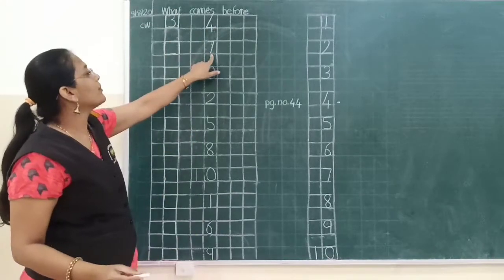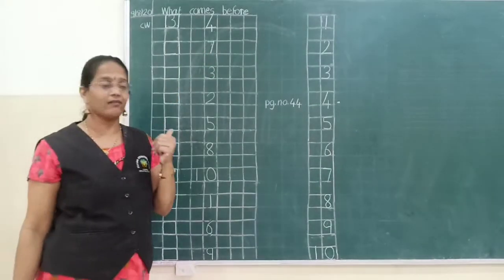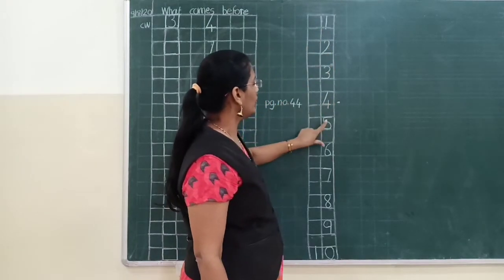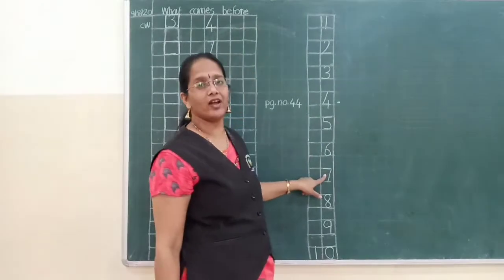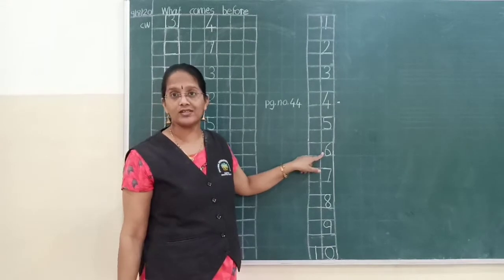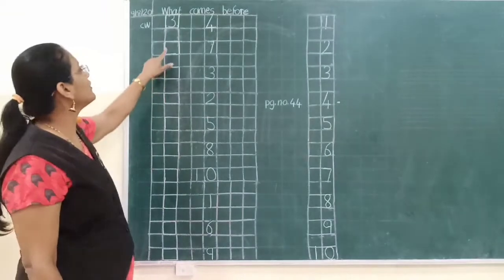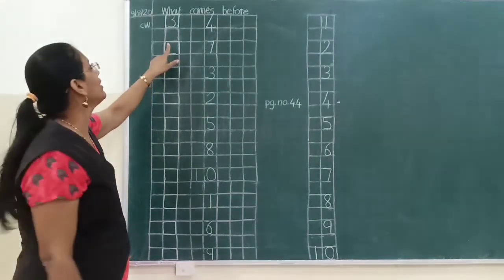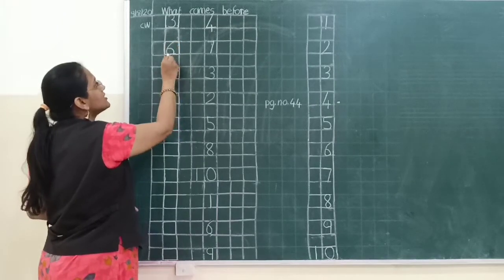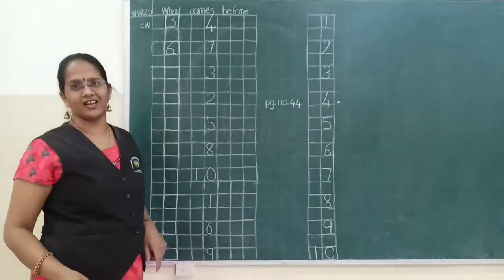Now see — yahan pe kaun sa number diya hai? Seven. So which number comes before seven? Let's see: one, two, three, four, five, six, seven. Seven ke pehle kaun sa number aaya? Which number comes before seven? It's six. So here, hum kya likhenge? Hum yahan pe likhenge number six. Because six, uske baad seven — six, seven, is tarah se.